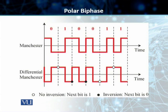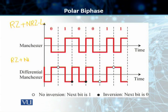The Manchester scheme essentially combines the return to zero and non-return to zero level schemes. Similarly, differential Manchester combines return to zero and non-return to zero invert schemes. In the case of Manchester coding, the duration of the bit is divided into two halves. The voltage remains at one level during the first half and it moves to the other level in the second half.